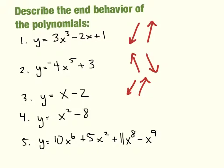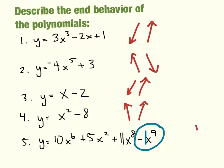Next: x squared minus 8. That's a positive x squared, so I know it ends up. And since the power is 2 and that's even, they both end in the same direction — both up. And then we have this last example. The leading coefficient here is negative 1, right? Because the degree of the polynomial is the biggest exponent. This one is not written in standard form — if it were, this negative x to the 9th would have been in the front. So I know it ends going down. And since it's to the 9th, it started from the up direction. And that's end behavior.